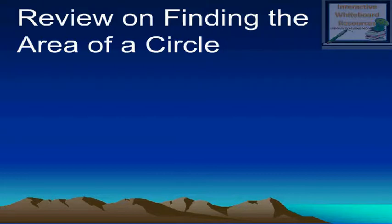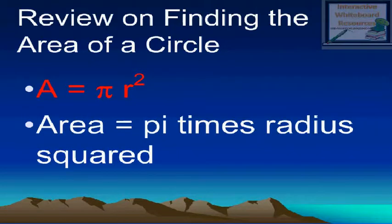Area of a circle equals pi r squared. Area equals pi times radius squared.